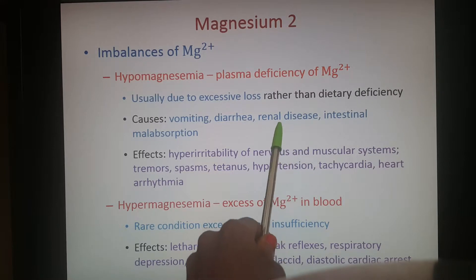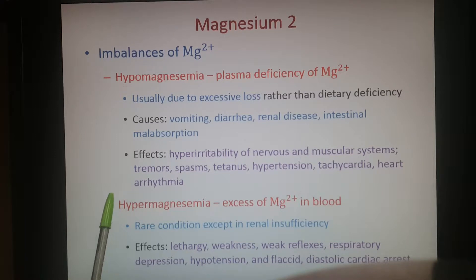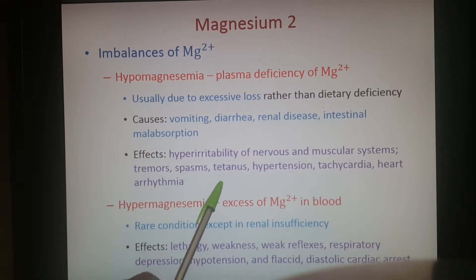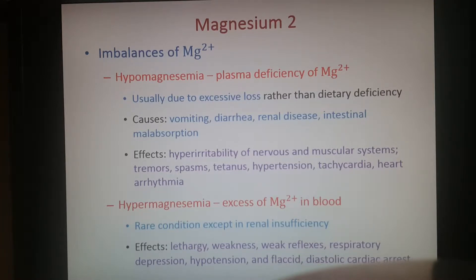Causes of hypomagnesemia include your intestines not absorbing the magnesium you ingested, losing fluids through vomiting and diarrhea, or your kidneys not working properly to retain magnesium. Effects include hyper-irritability of the nervous and muscular systems, resulting in tremors, muscle spasms, tetanus — that's continued contraction without relaxation — as well as hypertension, tachycardia, and heart arrhythmia.